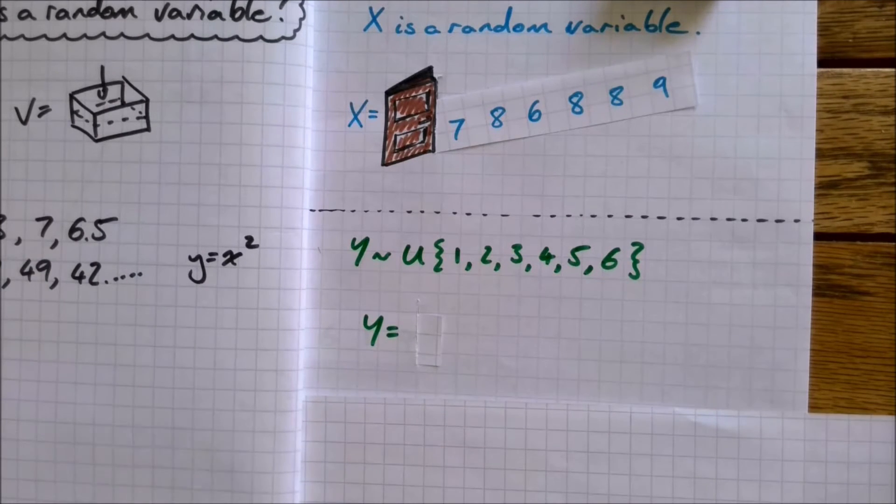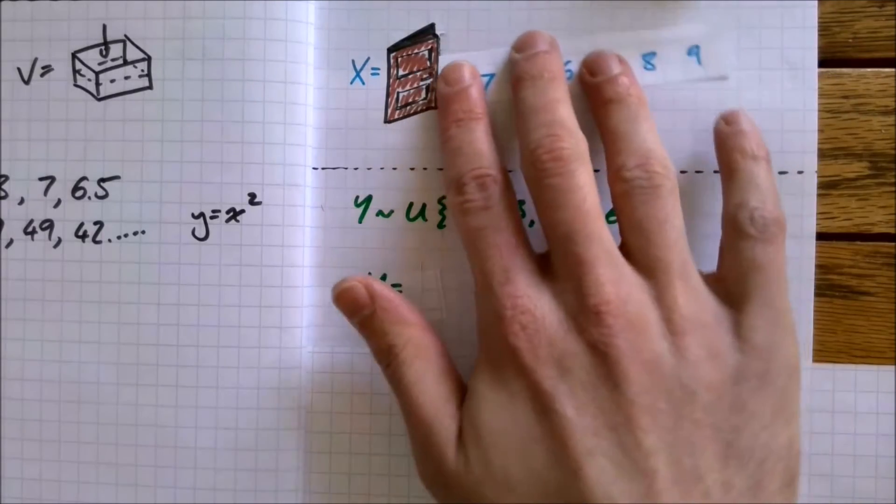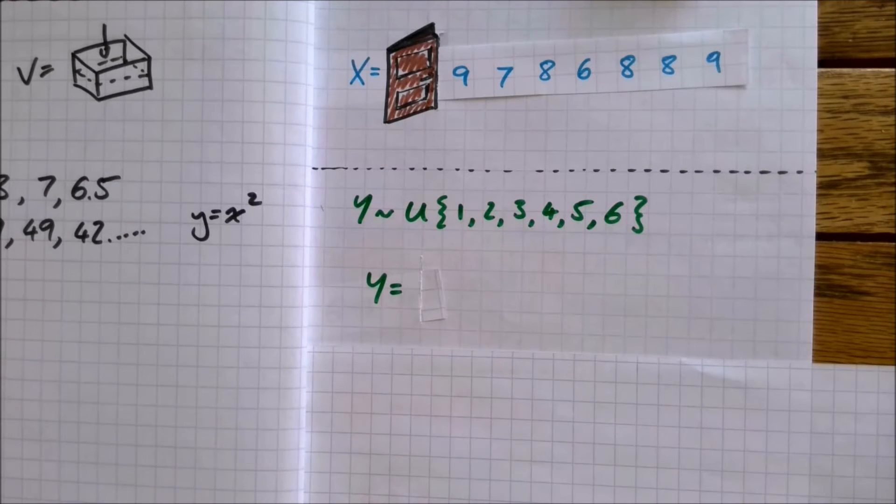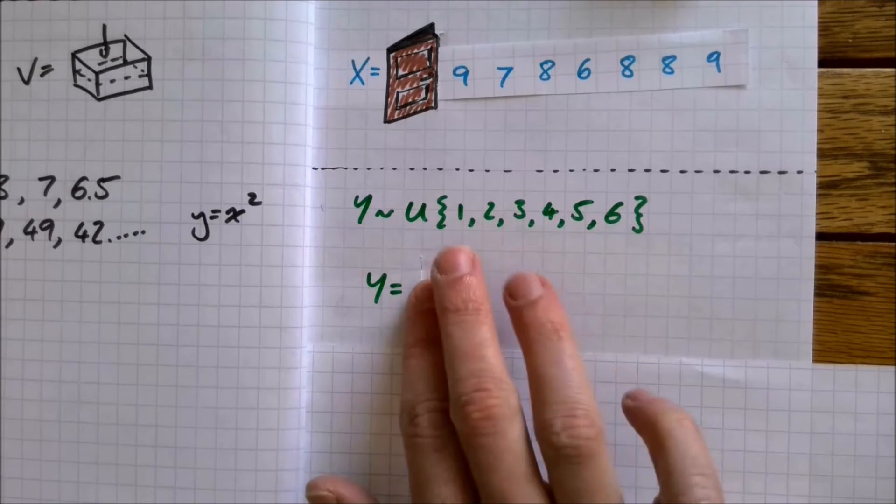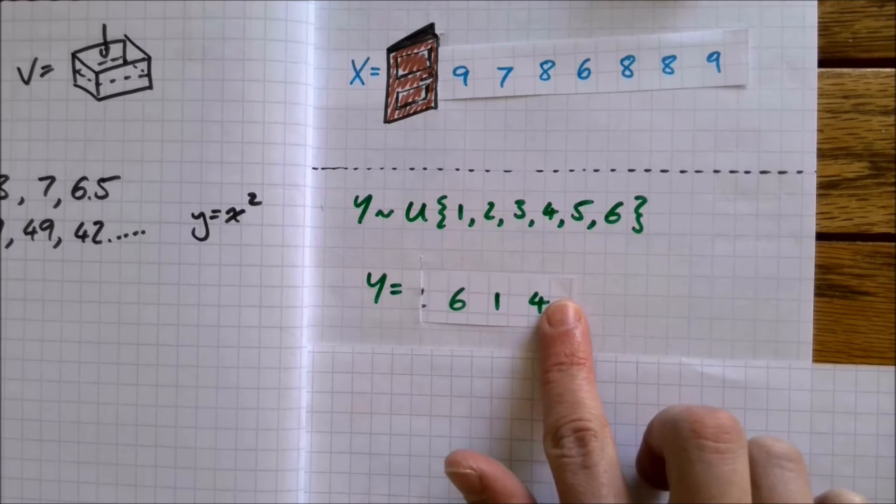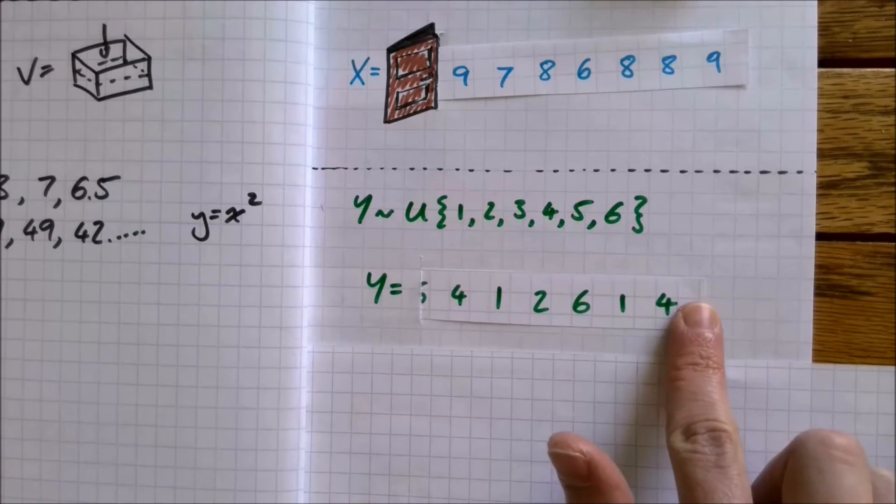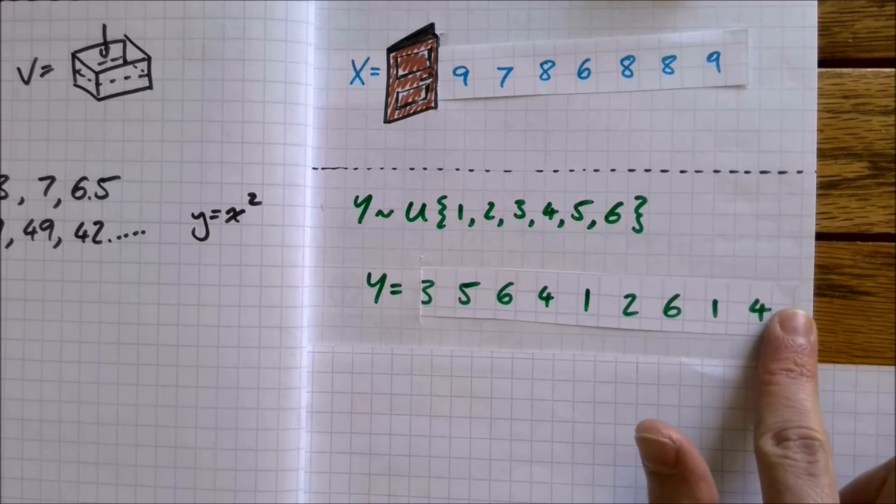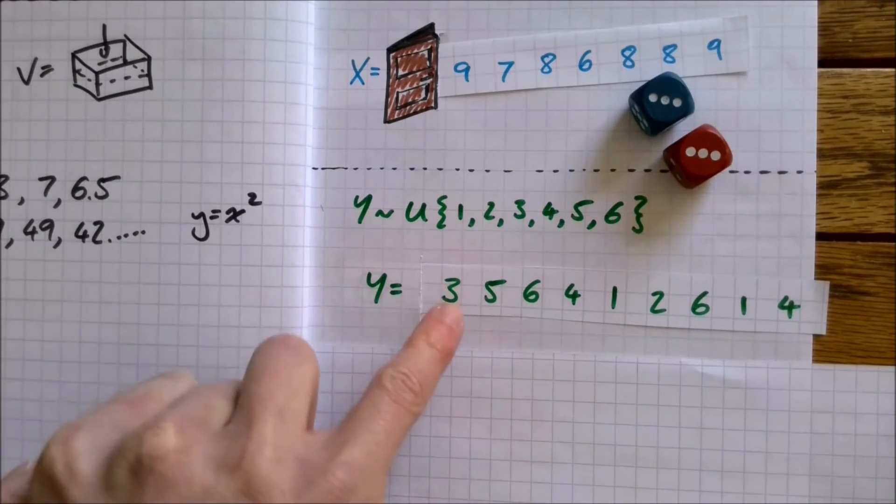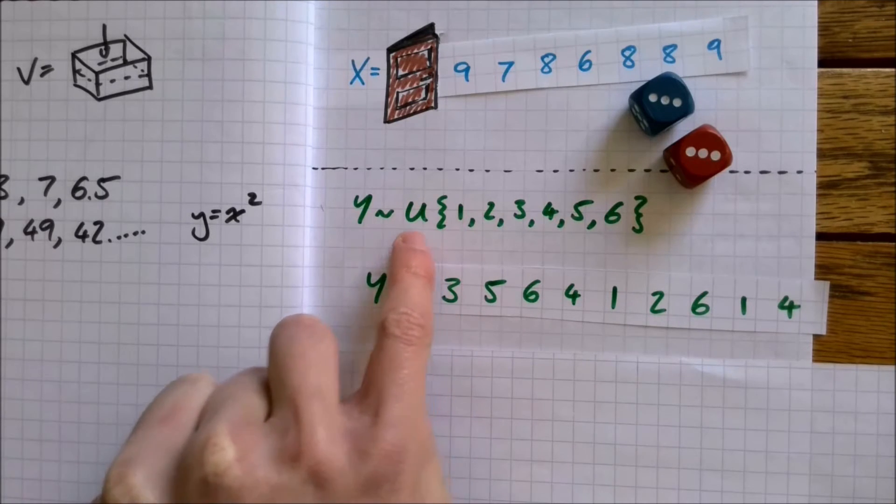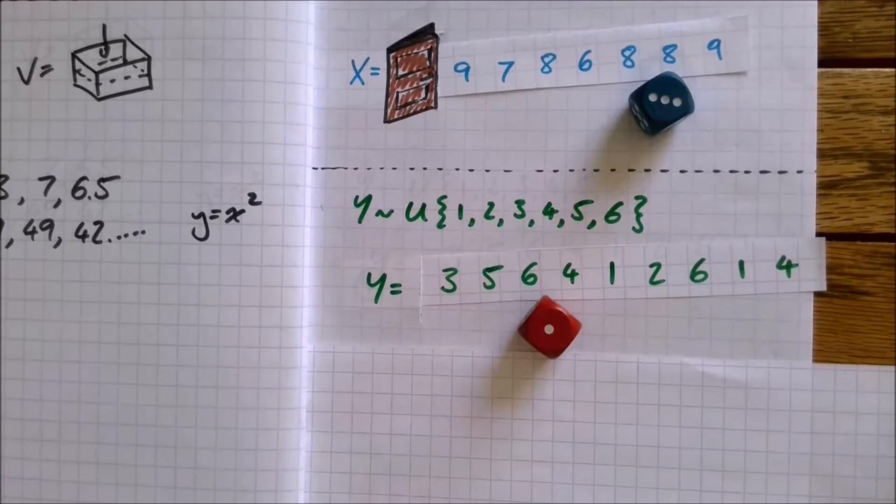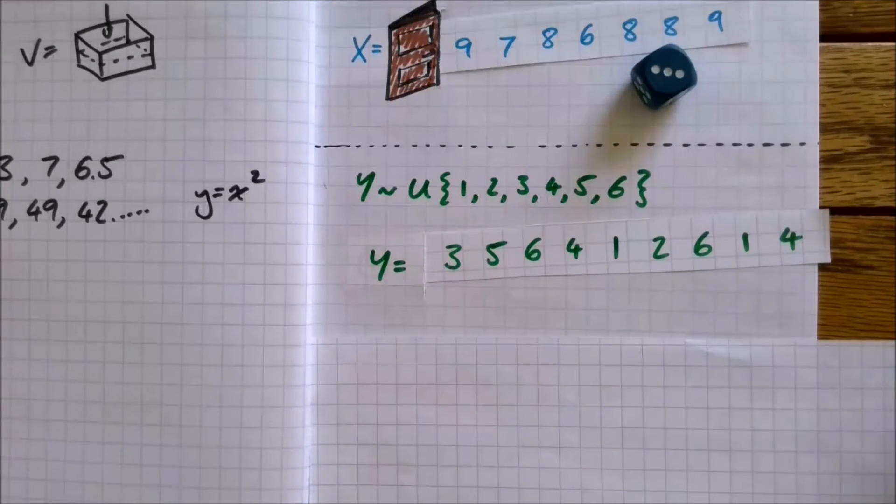The next random variable that I've got is y, and this is the notation that I've used to define it. I've said y twiddles u, and then open the curly brackets, 1, 2, 3, 4, 5, 6. See if you can figure out, as it spits out these random numbers, how this is defined. So y is going to be 4, and then 1, 6, 2, 1, 4, 6, 5, and now it's 3. So maybe you can guess that these numbers are popping up uniformly. This here is a uniform random variable on 1, 2, 3, 4, 5, 6, otherwise known as a dice roll. A uniform random variable is one of the simplest and neatest random variables that we can get.